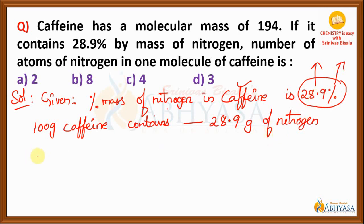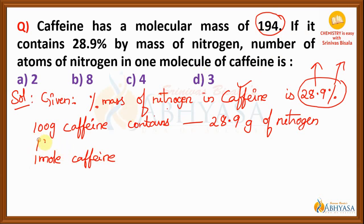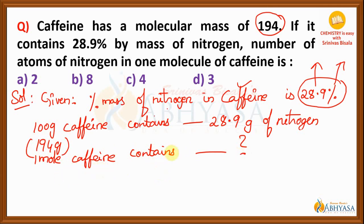Suppose we want to calculate in one mole of caffeine — and one mole of caffeine, in terms of mass, is 194 grams. So, 194 grams of caffeine contains how much quantity of nitrogen? We need to find out in one mole of caffeine how much nitrogen is present, and from there we will get the number of atoms in one molecule of caffeine.